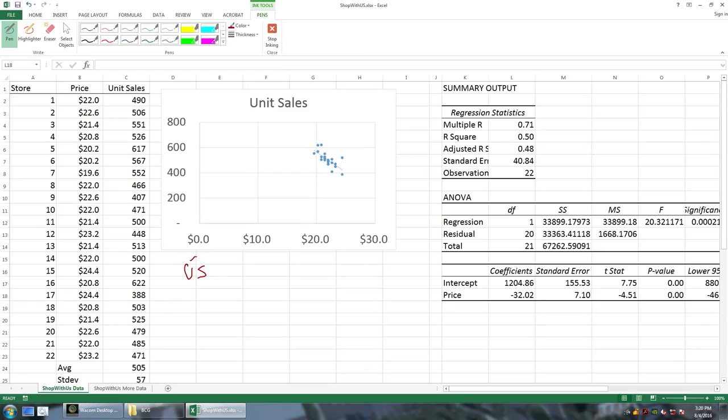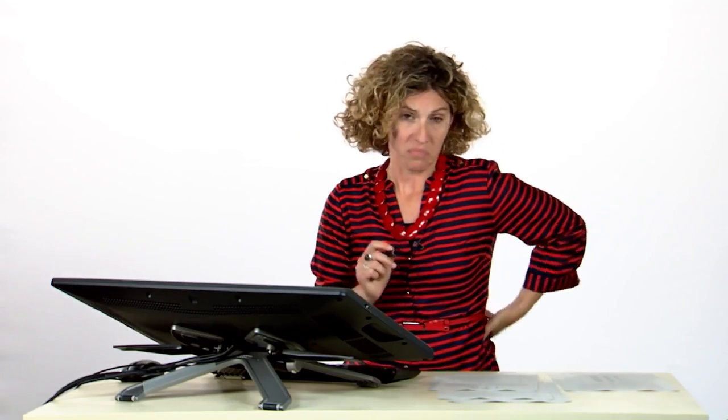So imagine we can write our relationship as follows. The estimate of units sold, my forecast of units sold is based on some intercept a plus some kind of slope b times my price. And so based on our report and Excel's analysis, it came up with coefficient estimates for this a and for this b. And so now, if I'm asking myself, what is going to be the number of units that I sell for a given price? I can plug in these parameters.